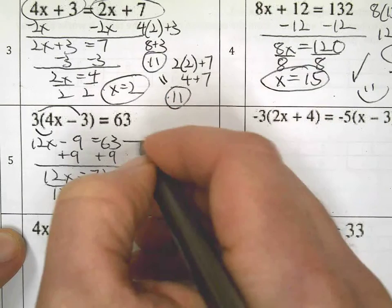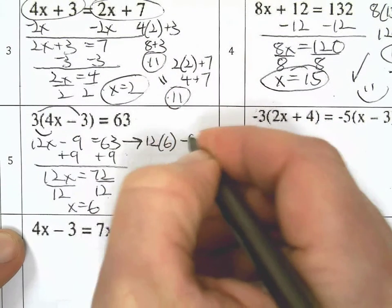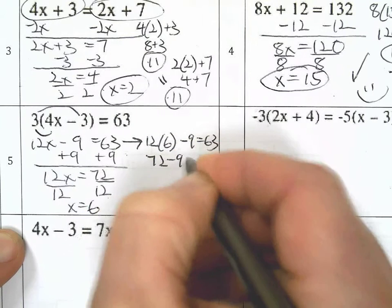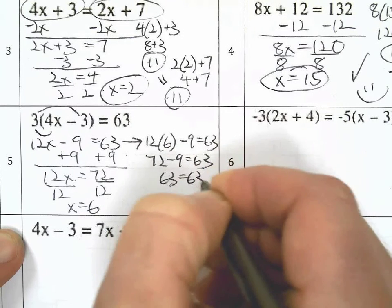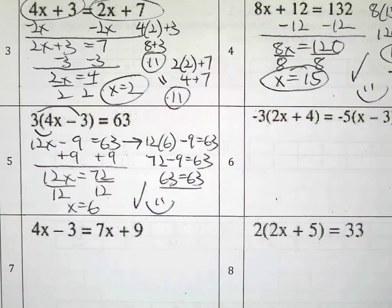Let's do a proof. Let's start here. 12 times 6 minus 9 equals 63. Let's check that out. 72 minus 9. Get out your calculator. Push a few buttons. Yes. Okay. True.